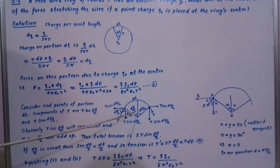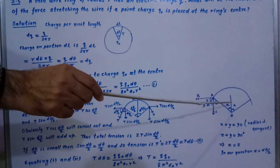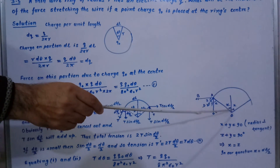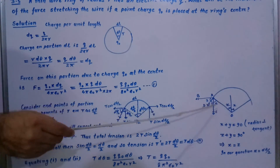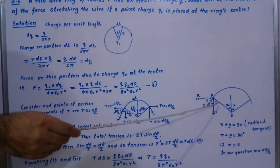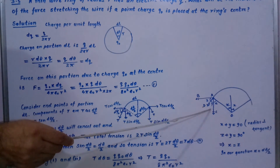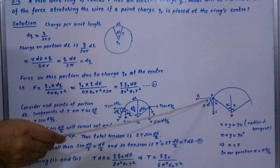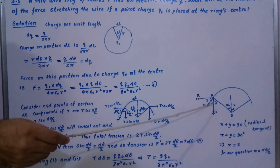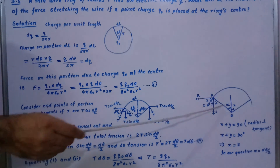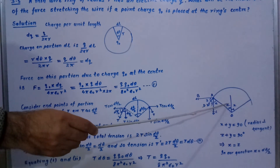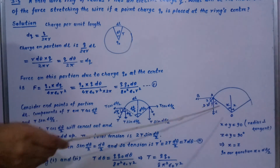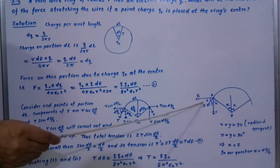This angle is shown in detail. If the half-angle is x, and x + y = 90°, and z + y = 90°, then z = x. So if this angle is dθ/2, this angle will also be dθ/2. Hence the answer. Thank you.